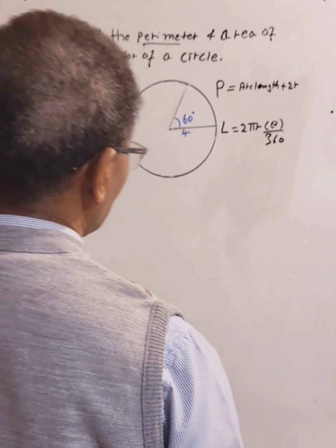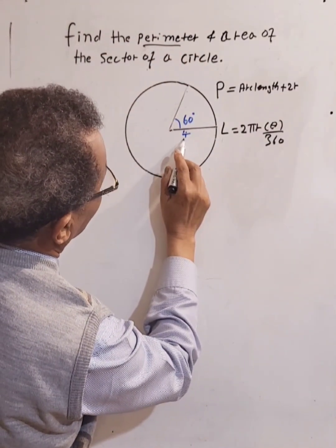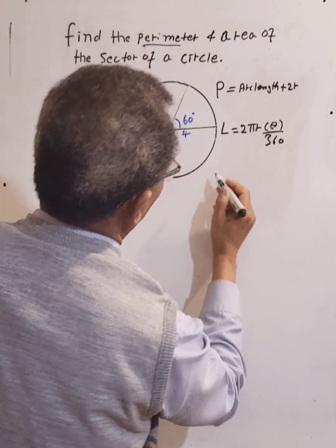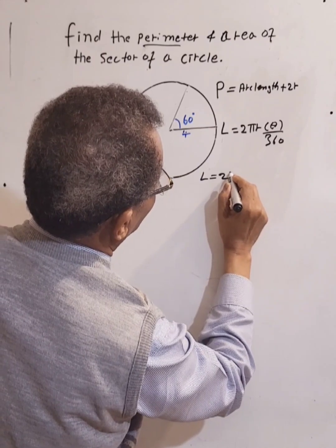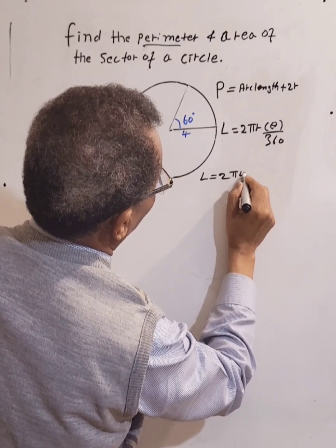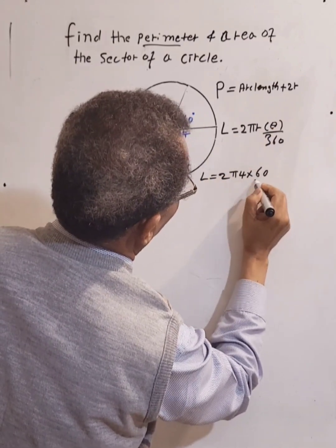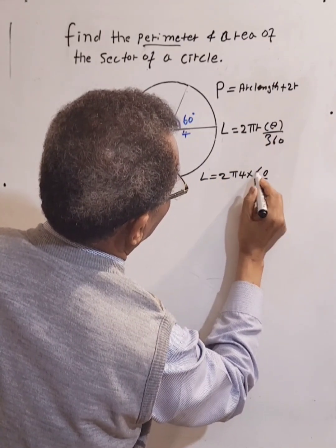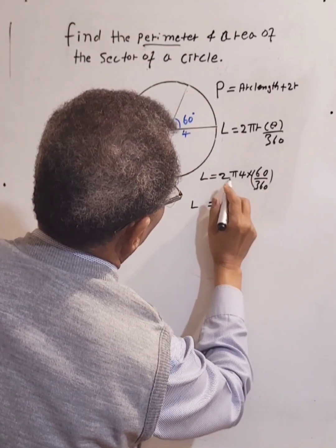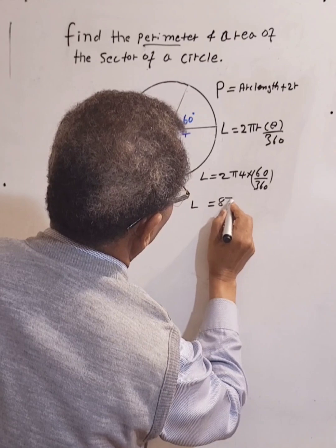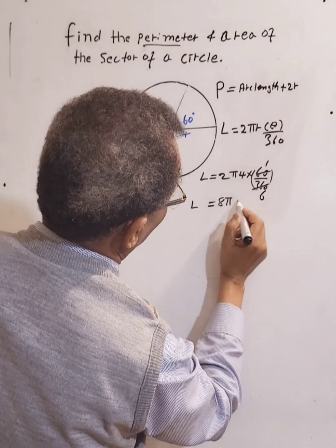We already have the radius, r is known. So L equals 2 times π times 4 times θ, which is 60, over 360. This equals 2 times π times 4, and this is 1 over 6.